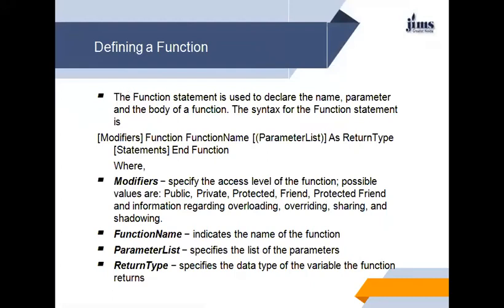Now, defining a function: the function statement is used to declare the name, parameter and the body of a function. The syntax is: modifiers, function keyword, function name, parameter list, as return type, then statements, then end function. Modifiers specify the access level of functions — public, private, protected, friend, protected friend — and information regarding overloading, overriding, sharing. Function name indicates the name of the function. Parameter list specifies the list of parameters. Return type specifies the data type of the variable the function returns.